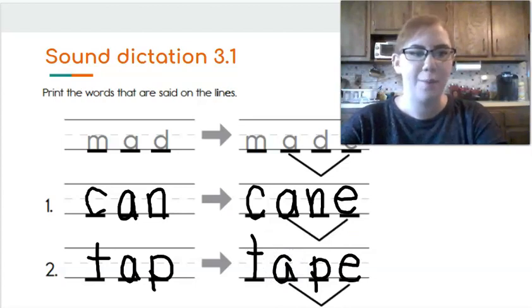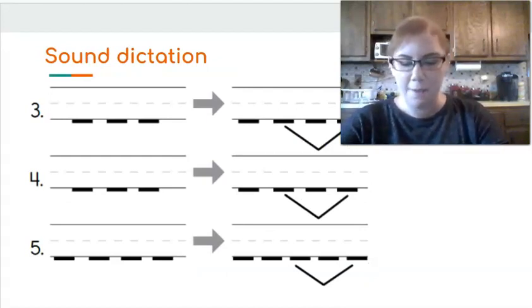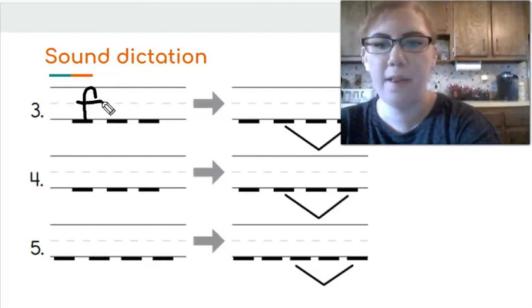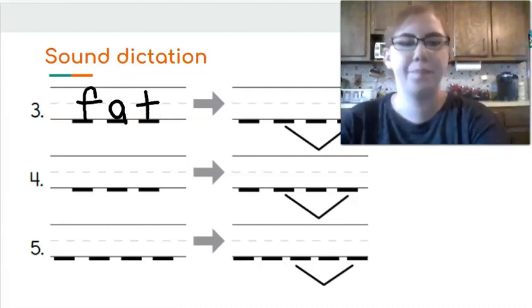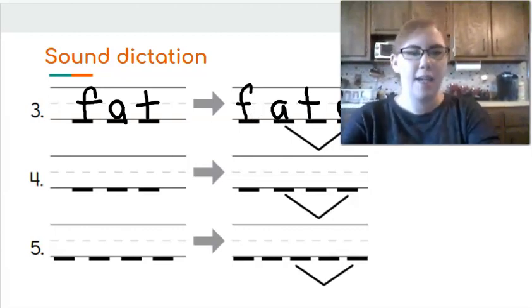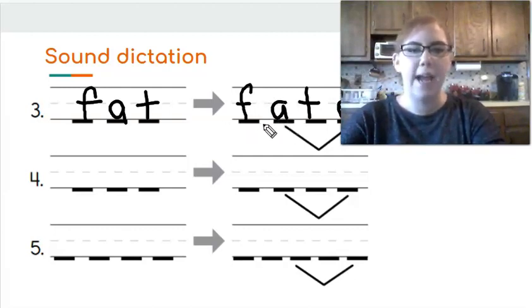Let's try three more. For number three, we're going to start with the word fat. Sound it out and write it. F, A, T, fat. Now let's add an E and see what we get. Remember that magic E changes the sound to A. Now it's fate instead of fat.